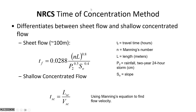A slightly less accurate method is the NRCS method. It accounts for length, Manning's n, and slope, but instead of rainfall intensity it uses a precipitation depth — specifically the two-year, 24-hour storm depth in centimeters. That's easier because it's non-iterative; we don't have to know the time of concentration to look up the 24-hour storm depth, which is a constant from the precipitation data frequency server.